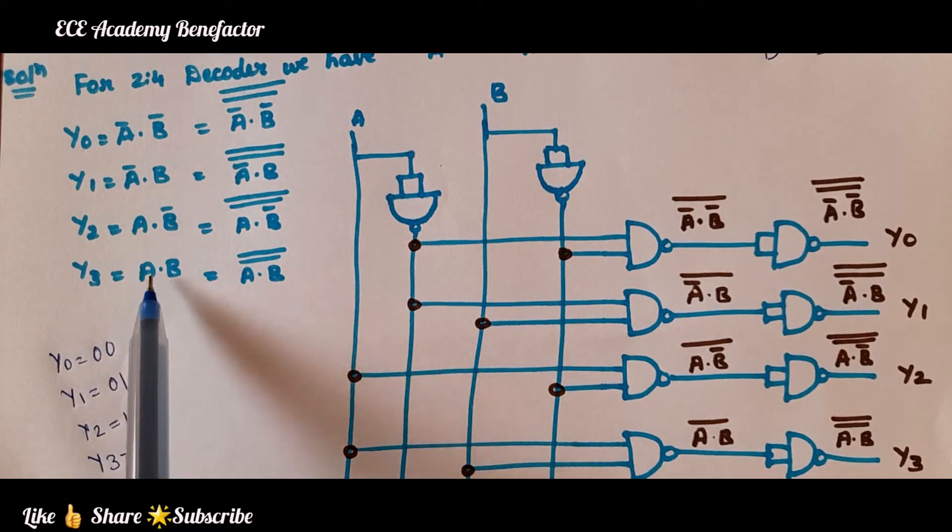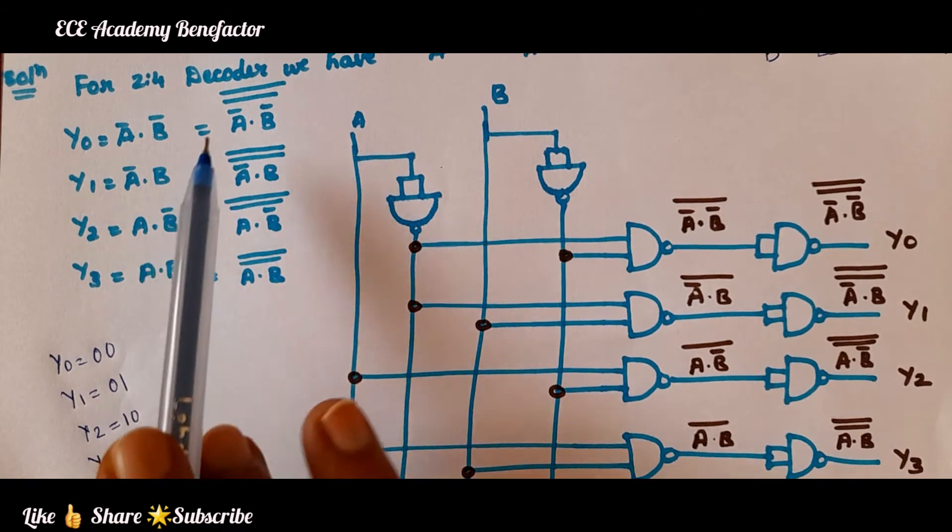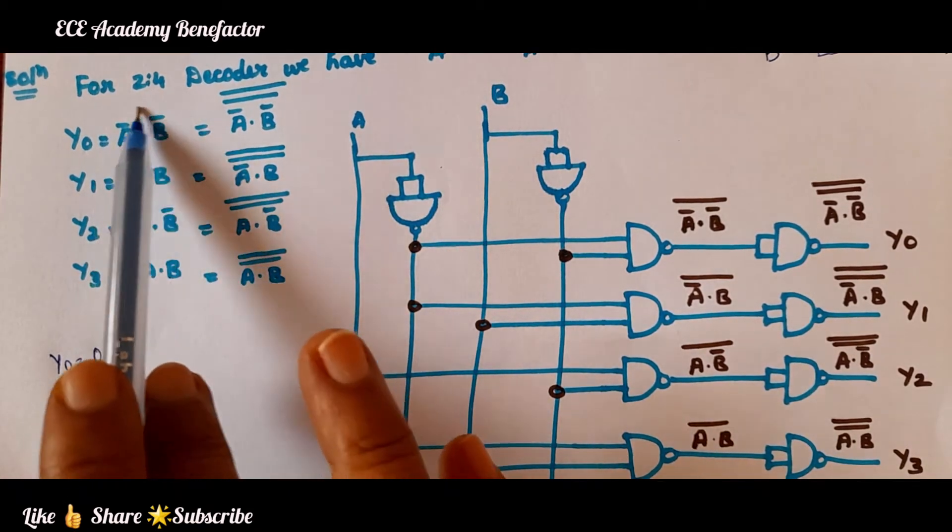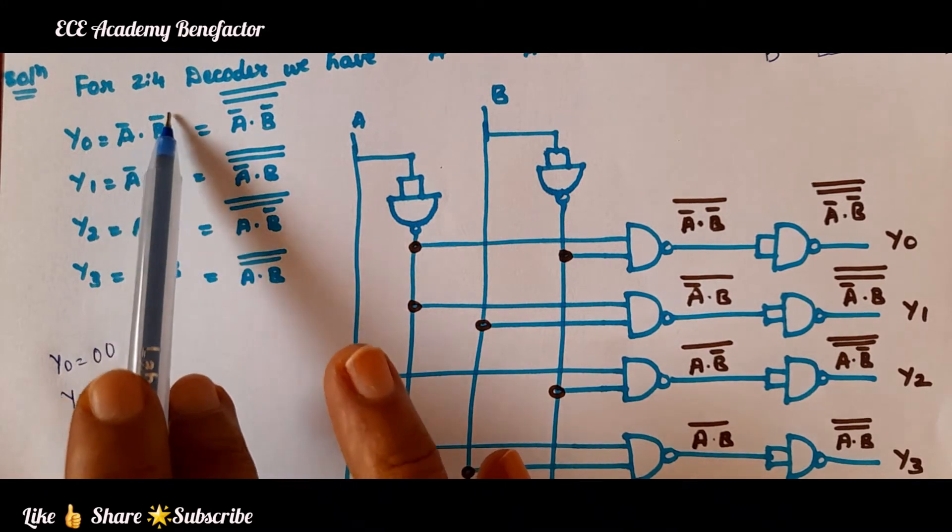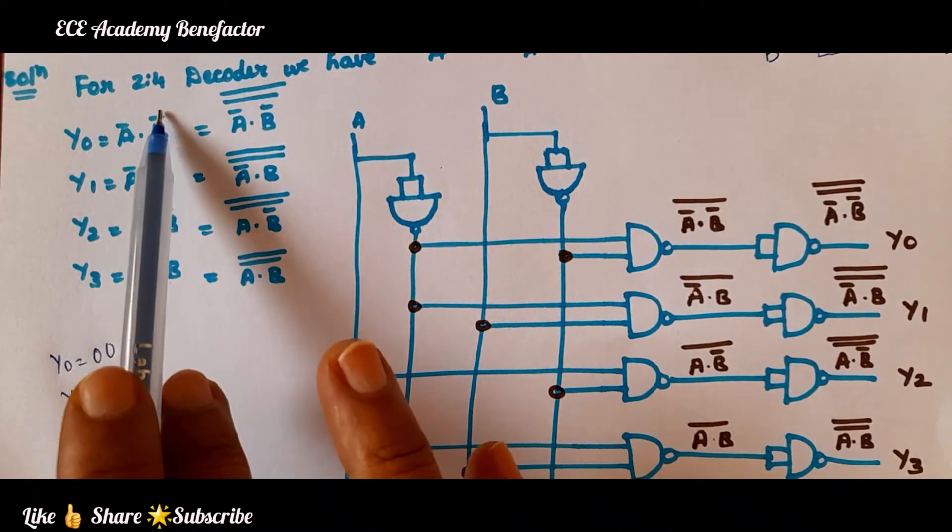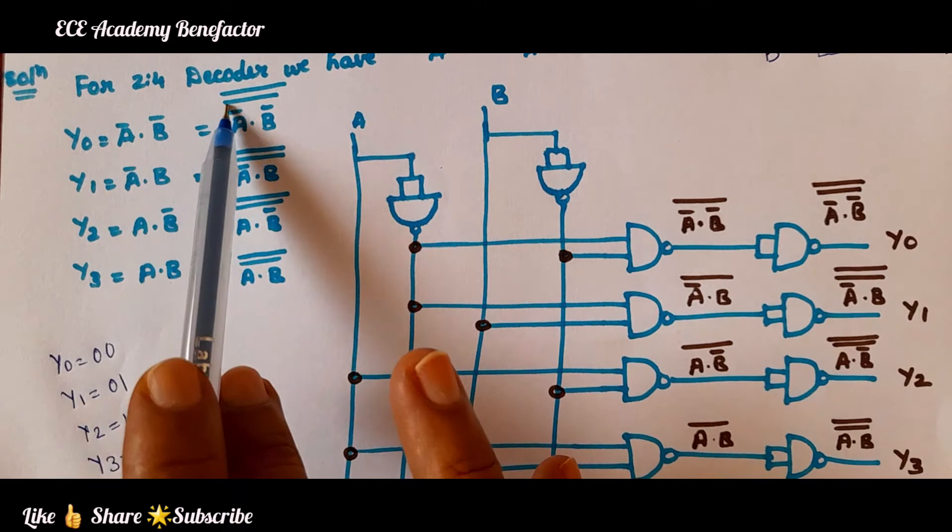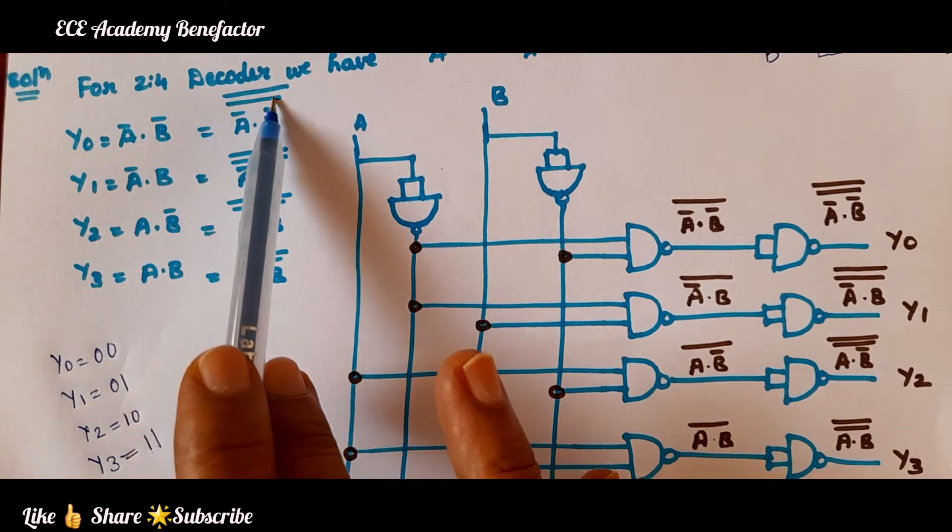To implement using NAND gates, first A̅·B̅ is given to a NAND gate. To make it as a NAND gate, we will put one bar on it.